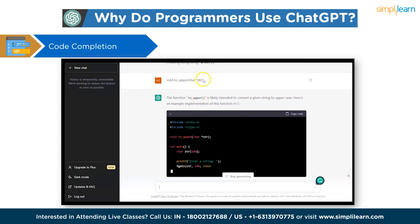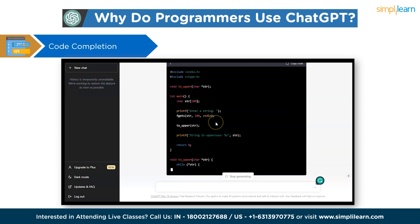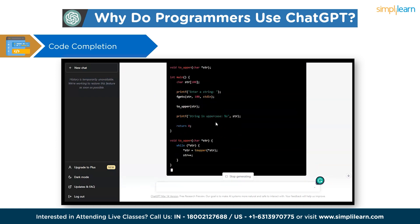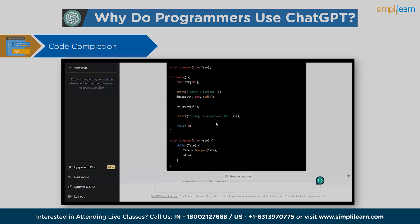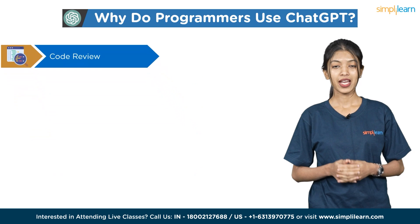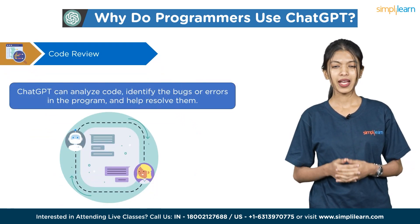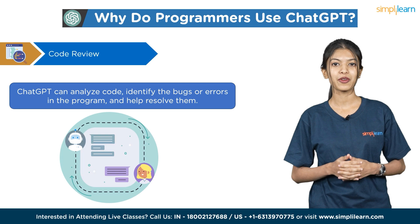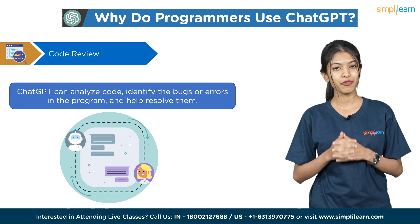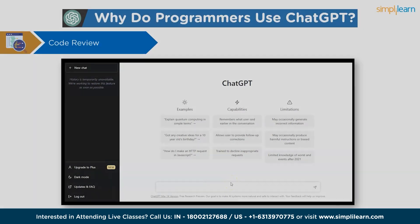We also gave just a method signature — void toUpper — and ChatGPT generated the complete code from that alone. This is how ChatGPT works for code completion. Next, code review: ChatGPT can analyze code, identify bugs or errors in the program, and further help resolve them, allowing developers to fix errors more quickly.